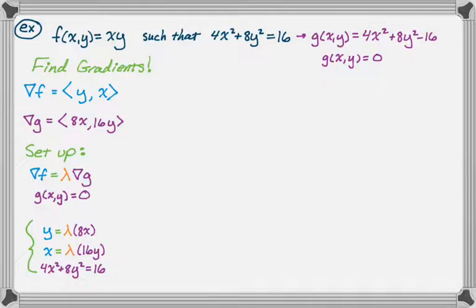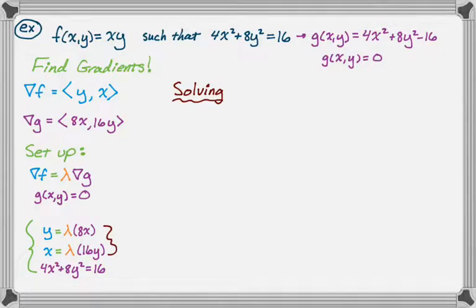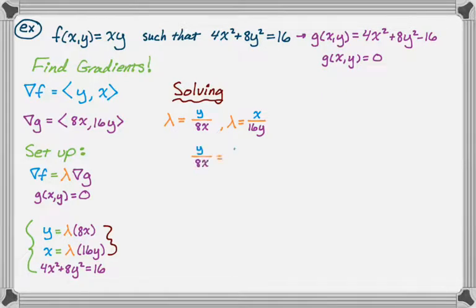Now we just need to solve this system, which is typically nonlinear. A good first step is to isolate lambda from each equation and then set them equal by transitivity. From the first equation, λ = y/(8x). From the second, λ = x/(16y). Setting those equal: y/(8x) = x/(16y), which gives 16y² = 8x², and dividing through, x² = 2y².